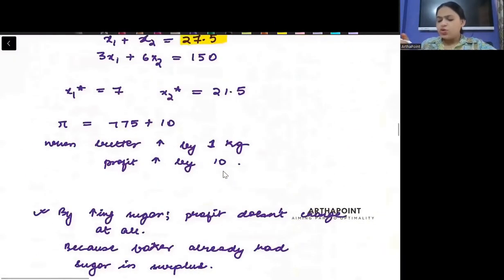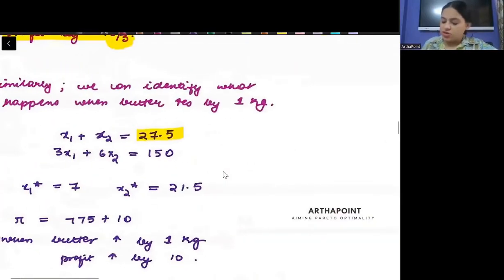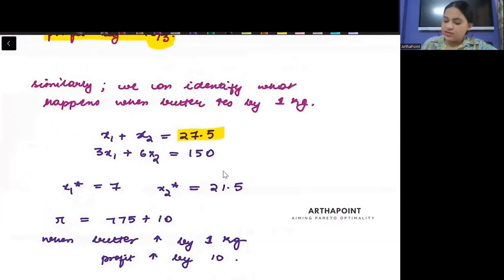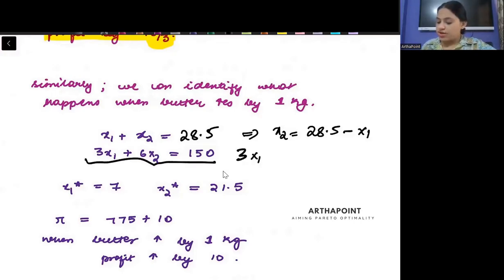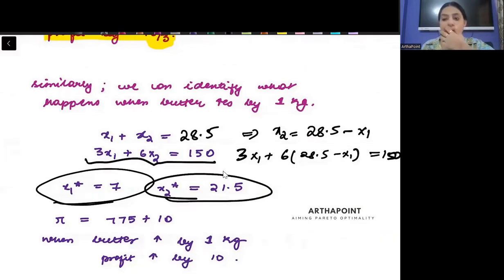Then you can do a similar analysis. Kaisa karhengi beta? Instead of this being 27.5, you will put here 28.5. And after putting 28.5 here, you will say, okay, x2 is equal to 28.5 minus x1. You will put that in this equation. 3x1 plus 6, 28.5 minus x1 is equal to 150. You will get x1 as 7 and x2 as 21.5.